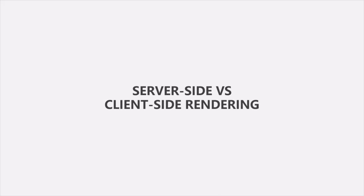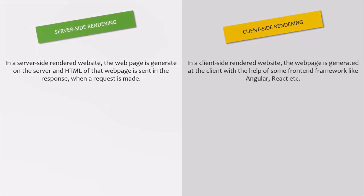Finally, in this section, let's learn one more concept about web development and how web pages are rendered in the browser or by any other client. Let's learn about different ways of page rendering. When we make a request to the server, we generally expect to see some UI on the client. Here, let's take an example of a browser as a client. The UI is generally created using HTML and CSS.